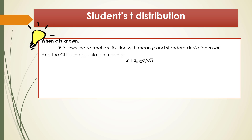However, sometimes we are not given the population standard deviation. When sigma is unknown, the assumption that x-bar follows the normal distribution is not validated. And we don't know sigma, so we cannot use the standard deviation sigma over square root of n. In that case, we need some replacement.